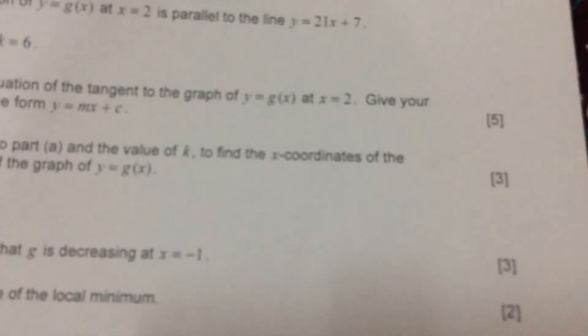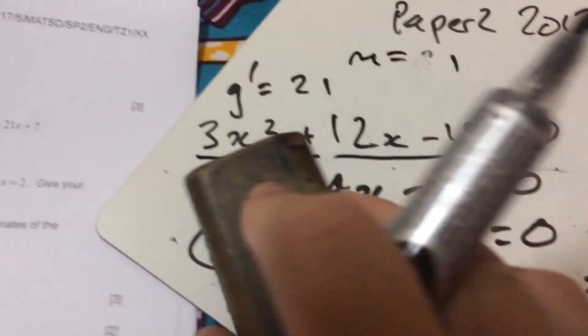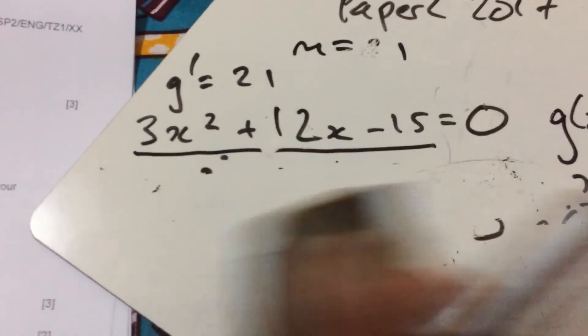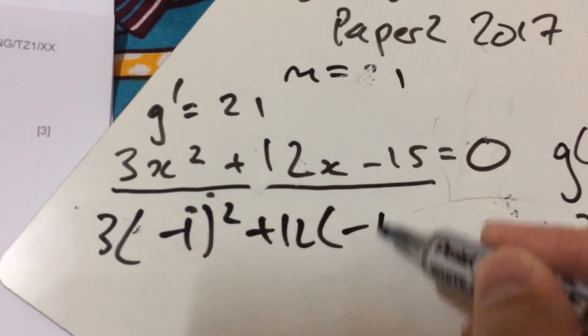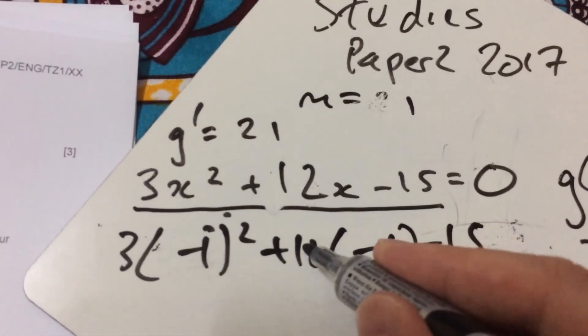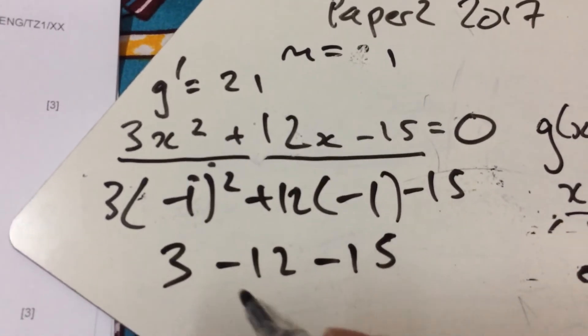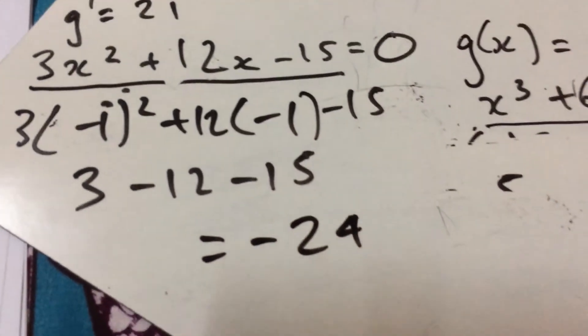Then, the question says, find g'(-1). So, we're going to go back to our gradient function and just plug -1 into that gradient function that we had. So, I can get rid of all this, just keeping my gradient function. I don't know why I've chosen to do the mini whiteboard at an angle. So, 3 times -1 squared + 12 times -1 - 15. So, that's 3 - 12 - 15. That's going to be -27 plus that 3 is going to be -24.